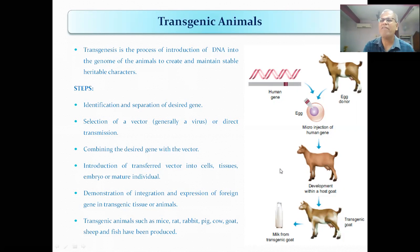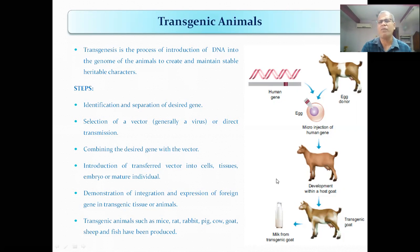If you introduce a protein gene, the animal will produce that protein. This kind of foreign gene introduced animal is said to be a transgenic animal or a genetically modified organism.